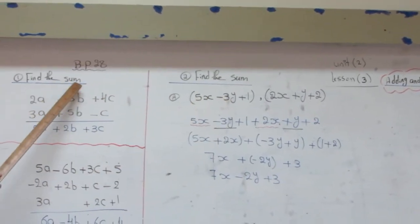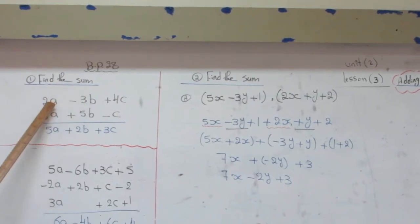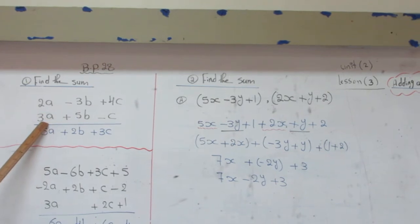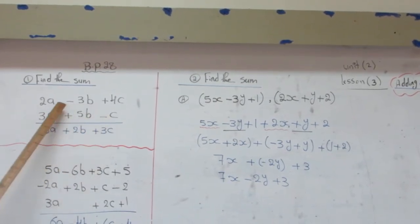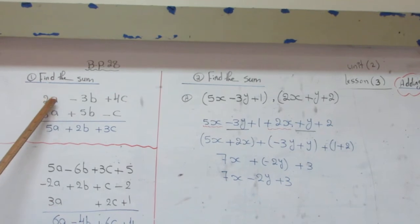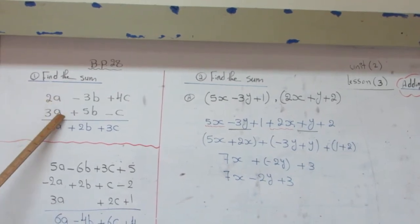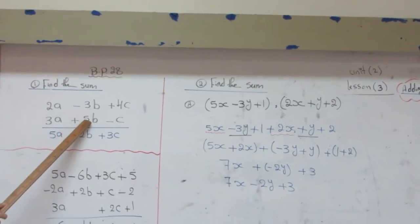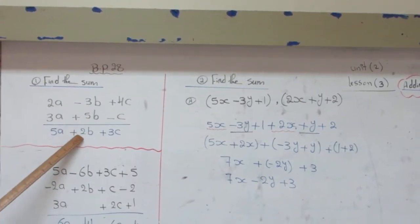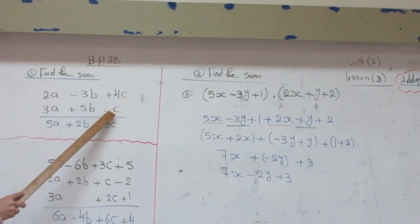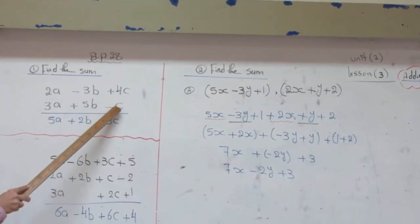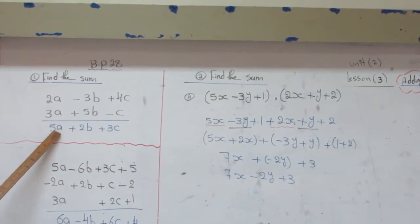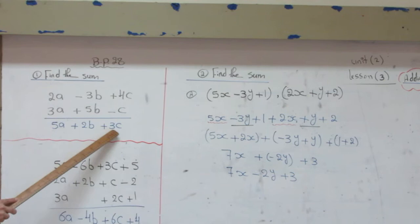Booklet page 28, number one, we said find the sum. 2A minus 3B plus 4C, and the other is 3A plus 5B minus C. Then I will collect the like terms. 2A plus 3A will be 5A. Negative 3 plus 5 will be positive 2B. Plus 4C minus C will be 3C. Then the expression will be 5A plus 2B plus 3C.